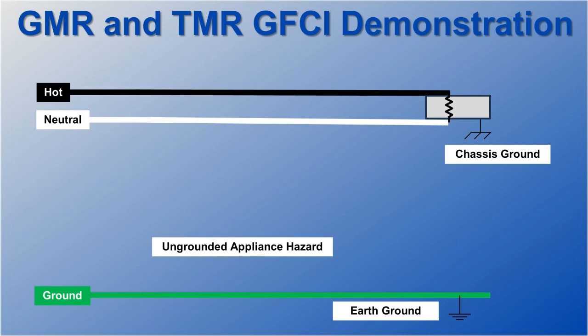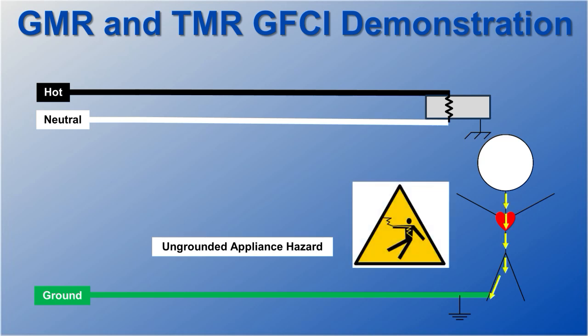One example is an ungrounded electrical appliance where a human could inadvertently provide a return current, a low impedance path to earth ground creating a potentially deadly hazard.